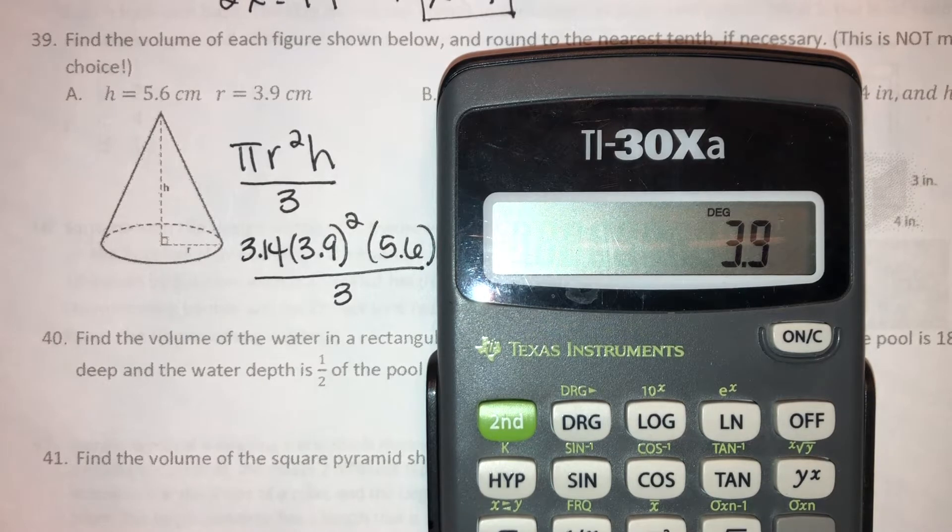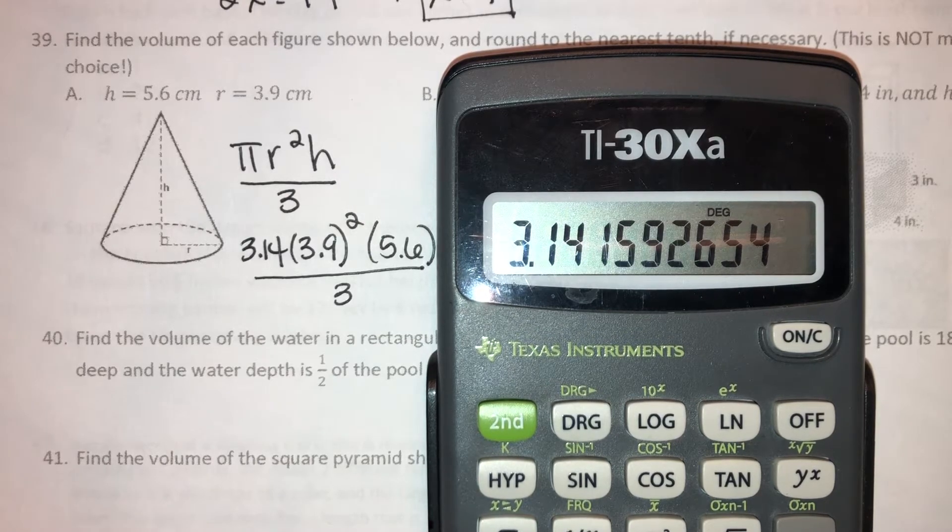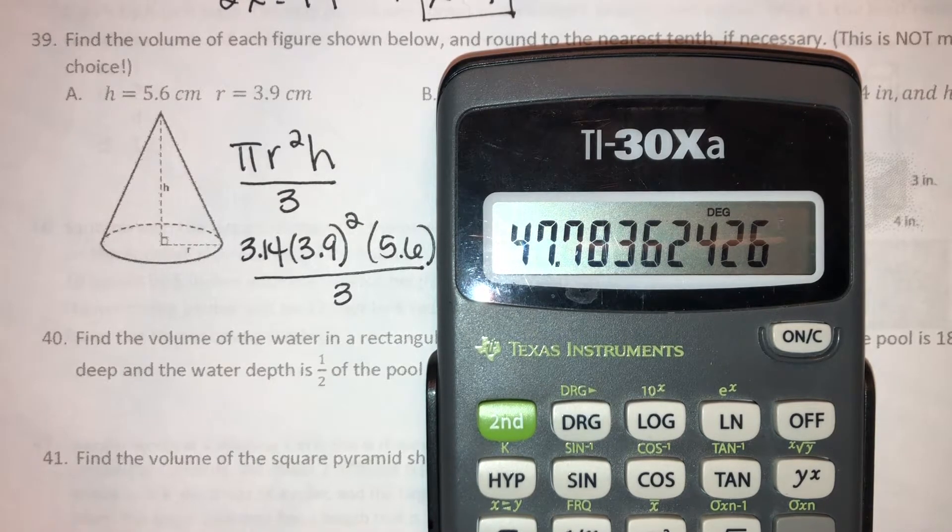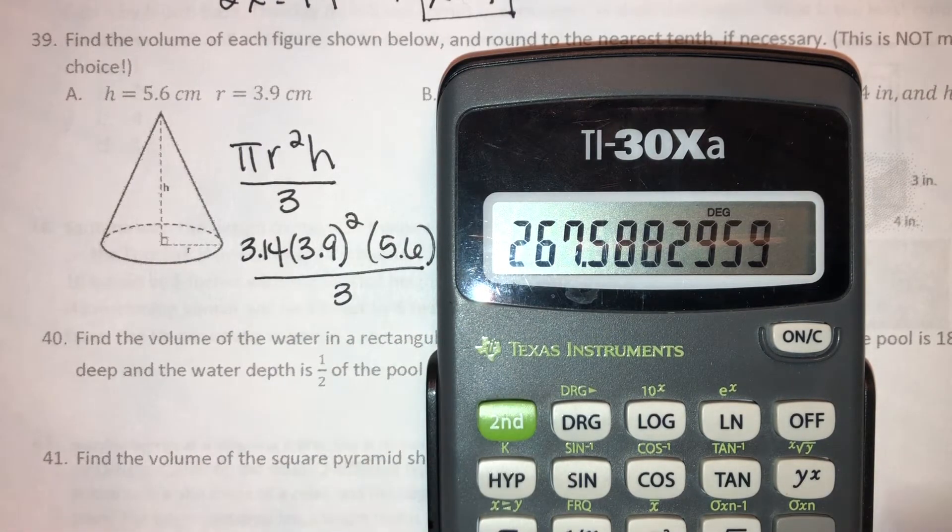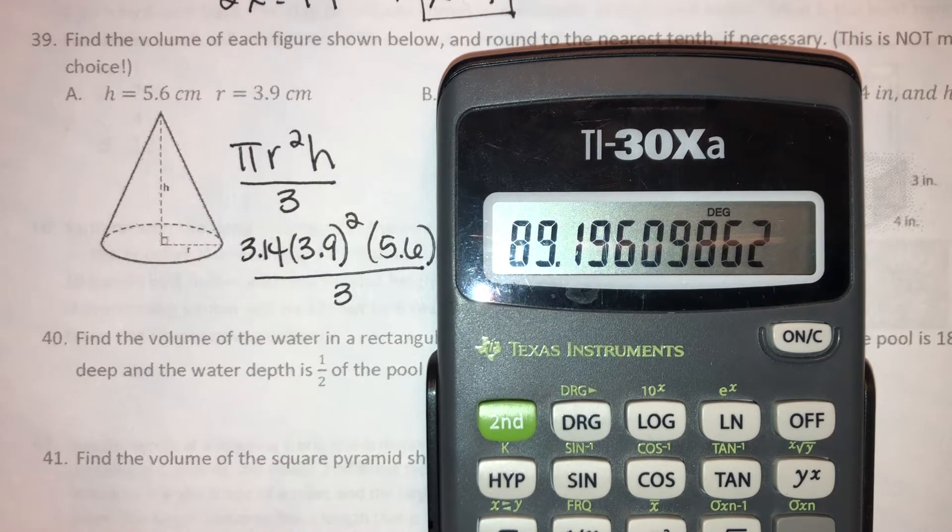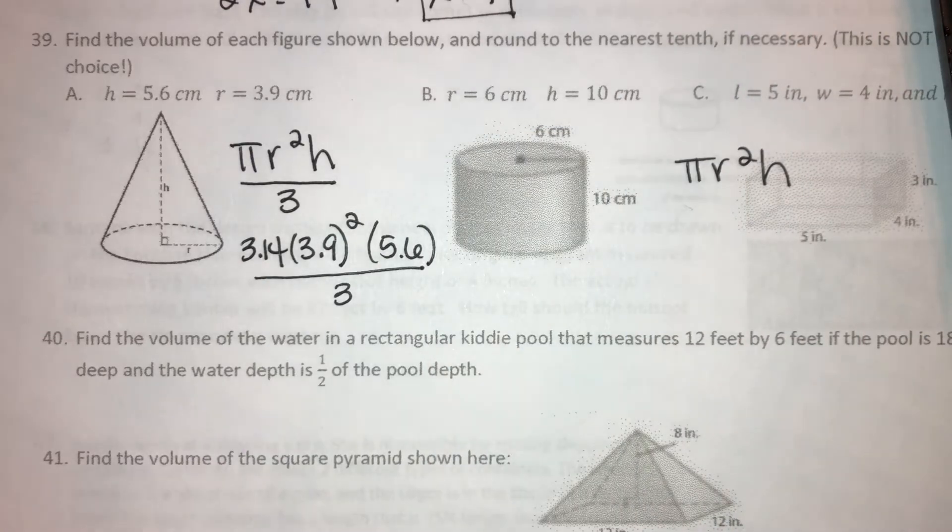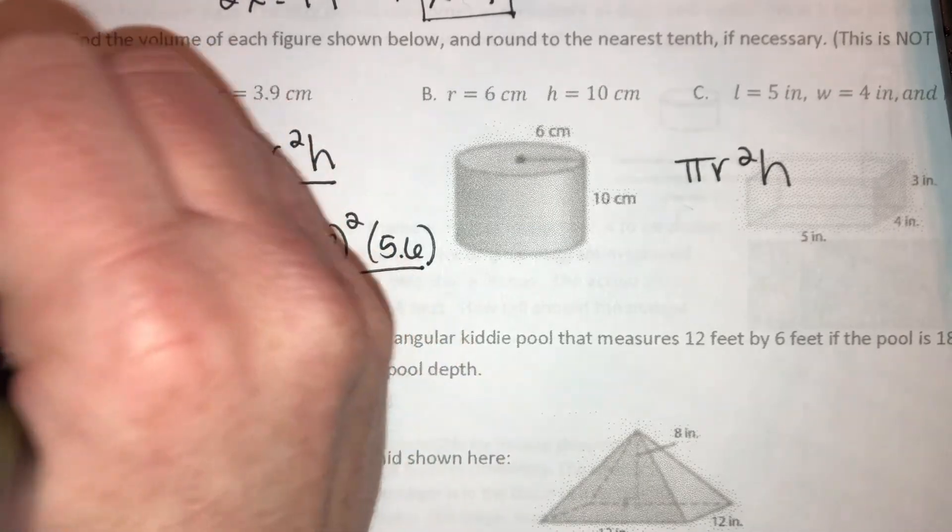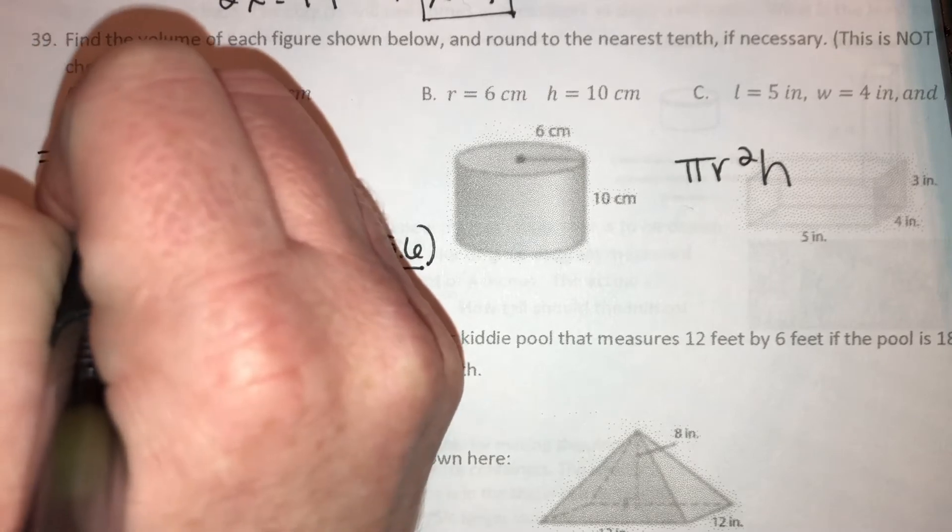First, I'm gonna do 3.9 squared, 15.21 times, I'm just gonna use the pi button on my calculator, equals times 5.6 equals. So that's the entire top, 267.588, blah blah blah, and then divide it by 3. And it says in the directions to round to the nearest tenth. So that would be 89.2. And it's volume, so that's units cubed. It's in centimeters. So we're gonna say 59.2 centimeters cubed.